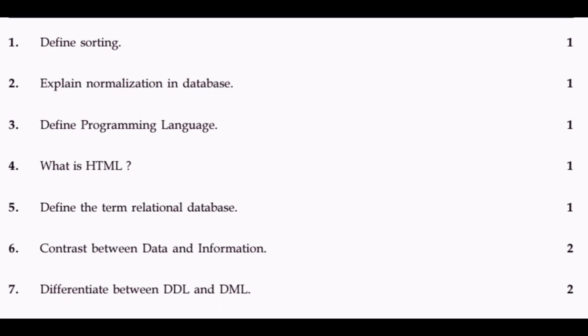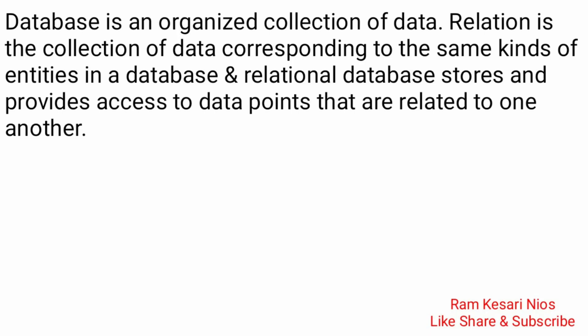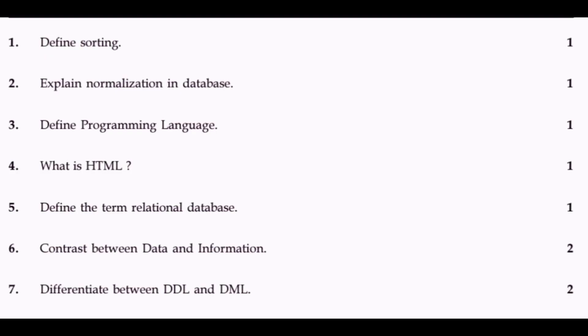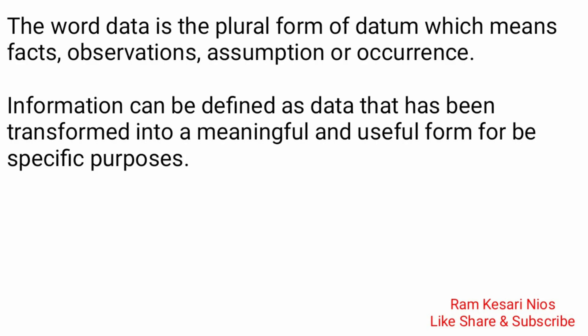Question 5: Define the term relational database. A database is an organized collection of data. A relation is the collection of data corresponding to the same kinds of entities in a database. A relational database stores and provides access to data points that are related to one another.